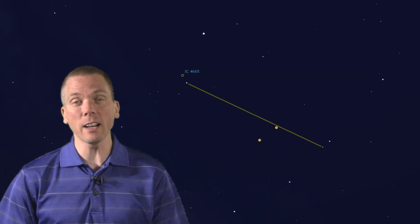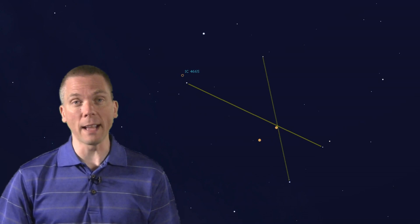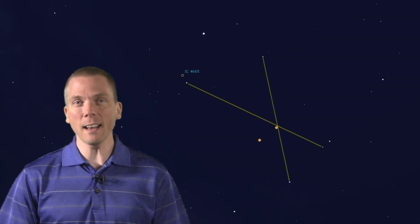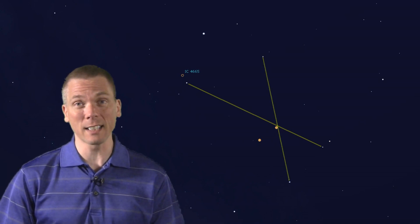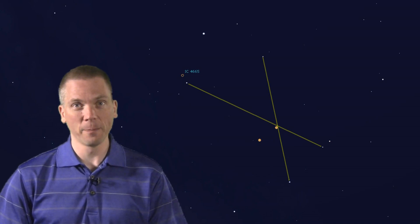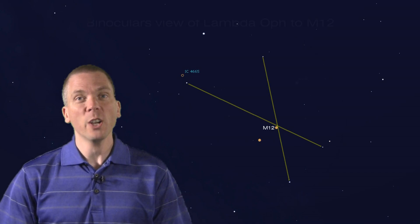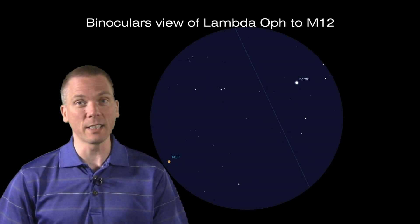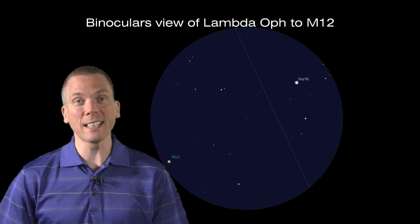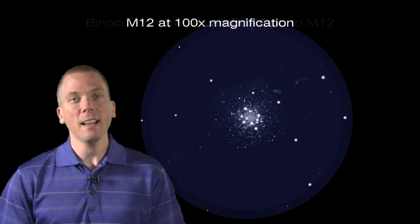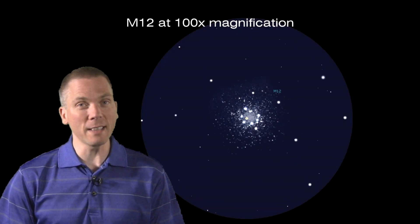Next, look from Zeta Ophiuchai to 3rd magnitude Kappa. Then imagine where those lines intersect, and point your finder there. In a long focal length eyepiece, Messier 12 should be visible. Good binoculars can also help track down this object, though it merely appears as a nebulous spot in them. Then increase the magnification for the best image size.